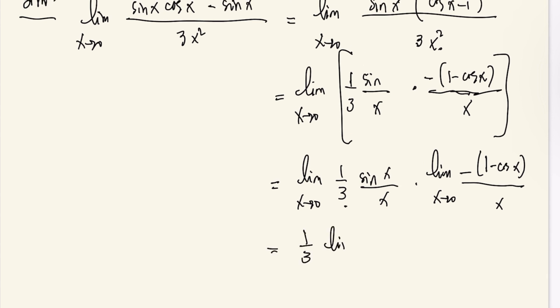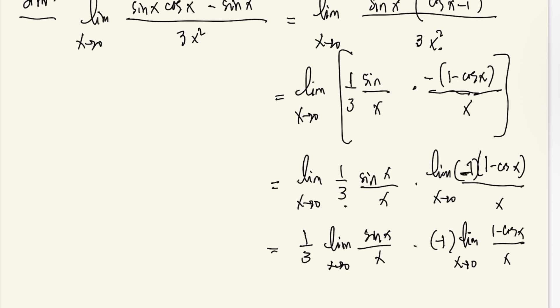The constant 1/3 factors out, and we have the limit of sine x over x times negative 1 times the limit of 1 minus cosine x all over x as x approaches 0. Using our two limit theorems, the sine limit equals 1 and the cosine limit equals 0, so the answer is 0. Let's have a final example.